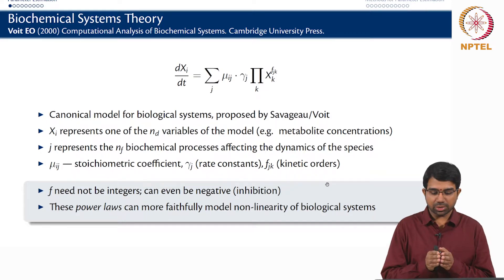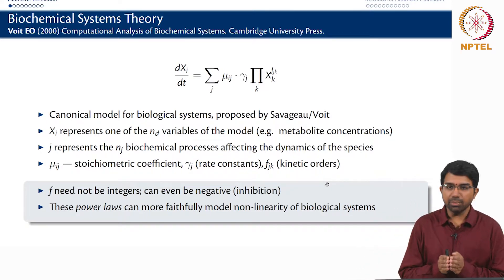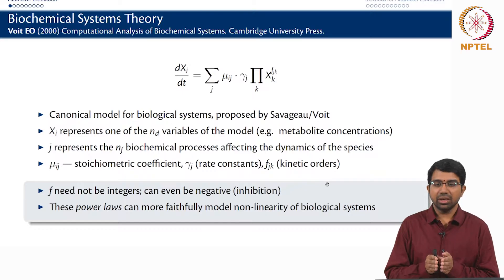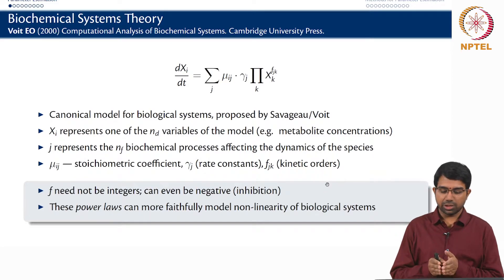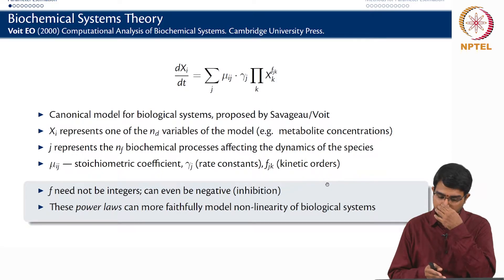You can see the power law here. dxi by dt is some product of xk raised to some power. What are your xi's? They are your concentrations of different species. Your mu_ij are like your stoichiometric coefficients, you have rate constants and the kinetic orders. And the orders can be negative and so on for inhibition and things like that.